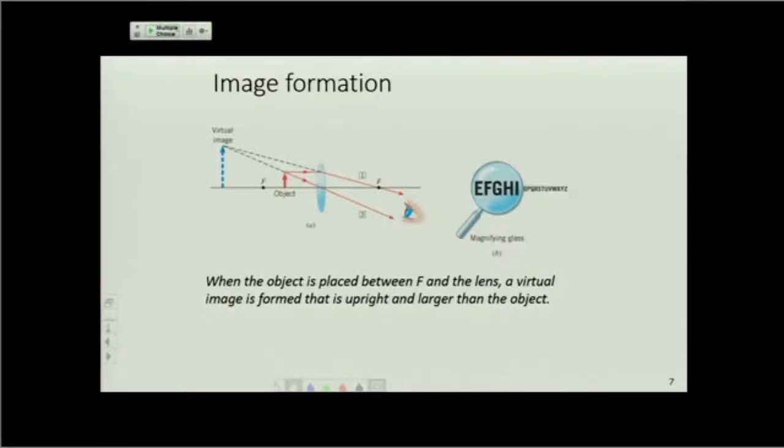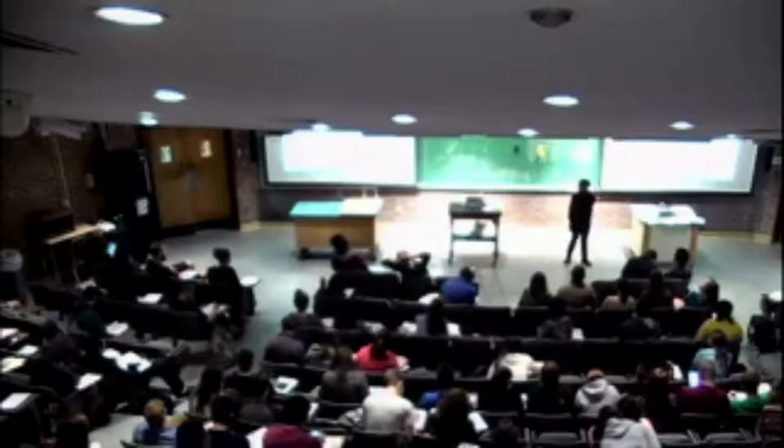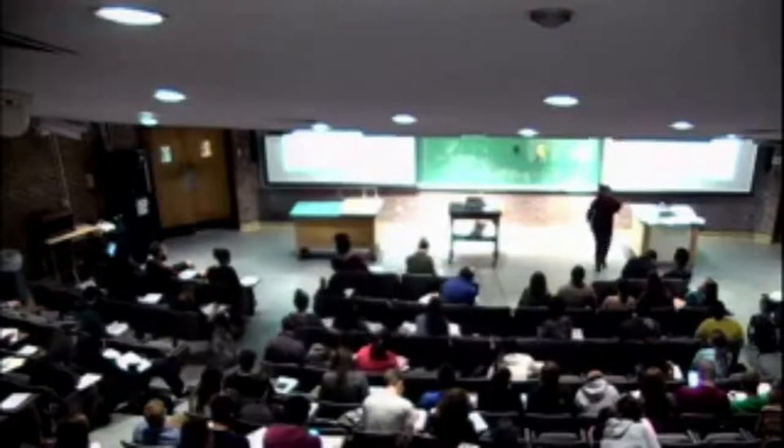If we change it to that, the object distance is f over 2, so the inverse is 2 over f. Instead of 1 minus 1 half, I get 1 minus 2, which is negative 1 over f. This means the image distance will be negative f. What does negative f mean? The image is formed at the focal point in front of the lens. That's what a negative image distance means—the image is in front of the lens.